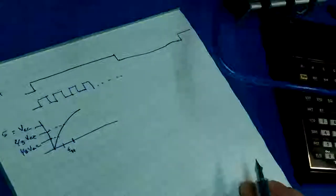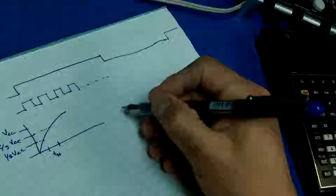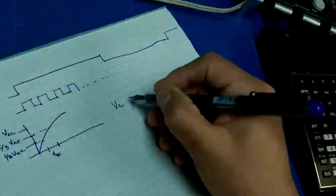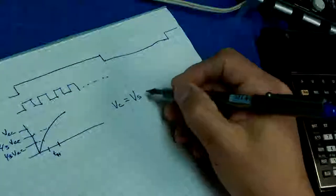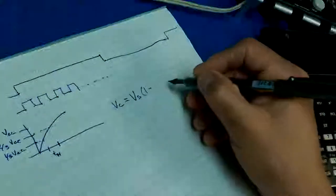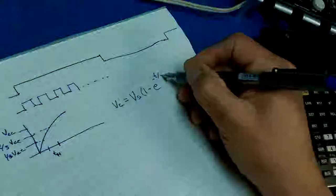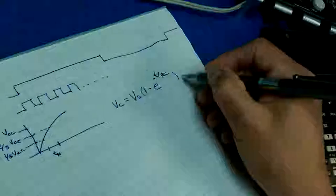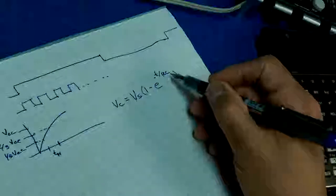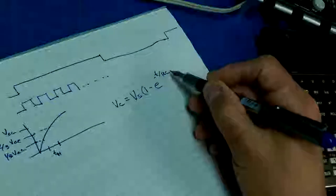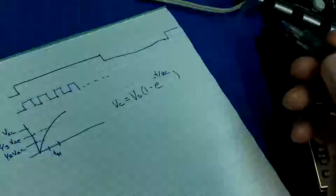The equation for charging a capacitor is: the voltage across the capacitor equals the supply voltage times one minus E to the negative T over RC. So we can figure out T if we know everything else. Let's pretend we know R and C — the time constant — because that's going to be a given.